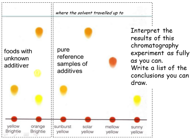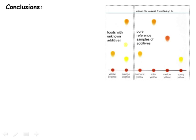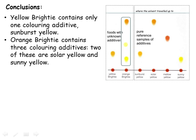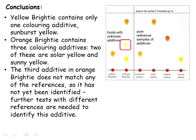Here's the result of a chromatography experiment where spots from two foods containing colouring additives were analysed alongside four different yellow colouring materials which might be in the foods. Pause the video whilst you look at the results and note down as many conclusions as you can. The yellow brighty only contains one colouring additive which matches with sunburst yellow. The orange brighty contains three additives, one of which is solar yellow and another of which is sunny yellow. The third additive does not match any of the reference materials, so further experiments will be necessary to identify this.